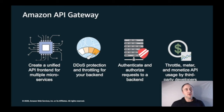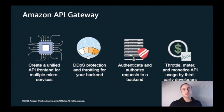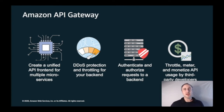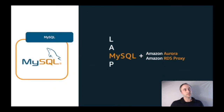Amazon API Gateway is a comprehensive service. Key features include being perfect for communicating with microservices, having built-in protection from DDoS attacks and throttling for your back-end, and the ability to configure authentication and authorization for requests to a back-end in a number of different ways.